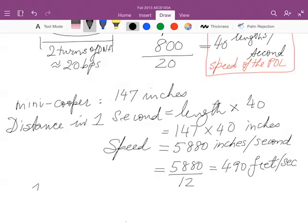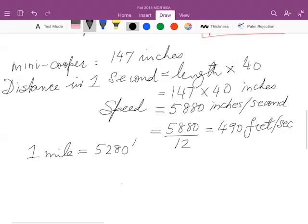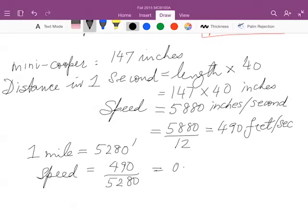Now I use the fact that one mile equals 5,280 feet, which I indicate with that little stroke there. And then, therefore, the speed in miles per hour will be 490 feet per second divided by 5,280 feet per mile, which ends up being 0.093 miles per second.